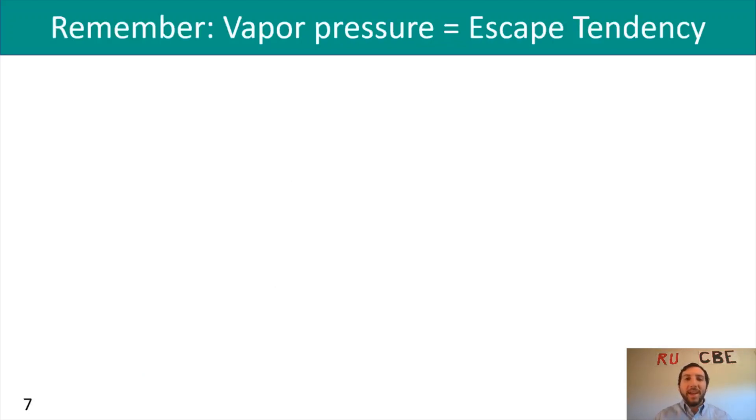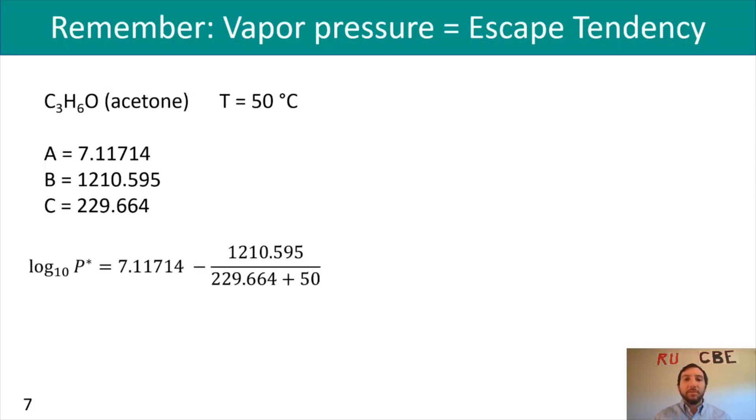One example: for acetone at T = 50°C, we have our A, B, and C constants. I can take the Antoine equation and substitute in all my known values. Then I can rearrange, exponentiate, and calculate 10^(A - B/(T+C)). In that case, P* for acetone is 614.1 mm Hg. I encourage you to double check this to make sure you can also get that value.